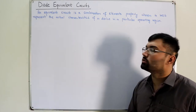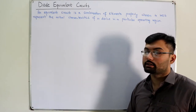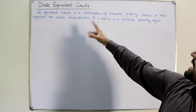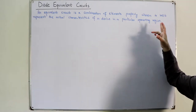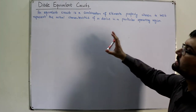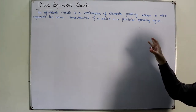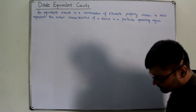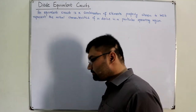What do we mean by the equivalent circuit? An equivalent circuit is a combination of elements properly chosen to best represent the actual characteristics of a device in a particular operating region. This is the definition the book has given.